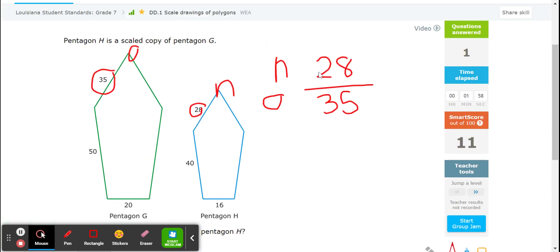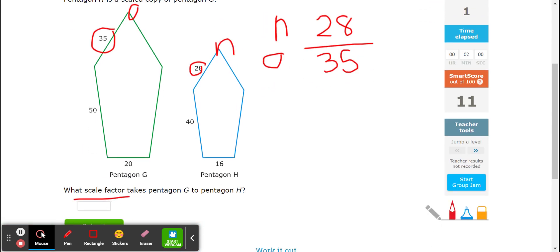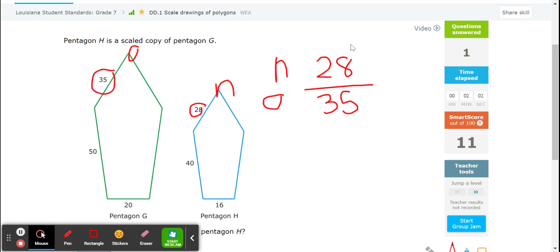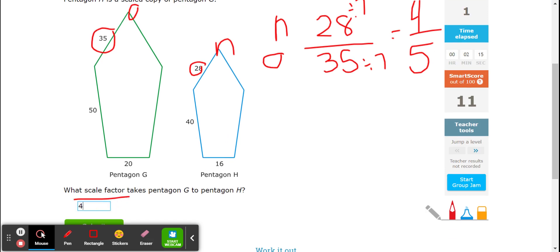Alright. So as I said, you actually could type this in, and they will mark it correct. But I see that I can simplify, because I know that 7 goes into 28, and 7 goes into 35. So my scale factor is 4 fifths.